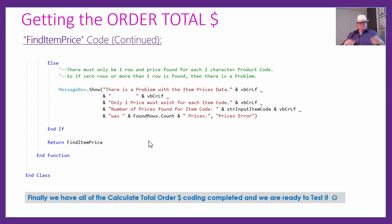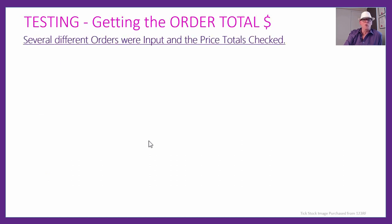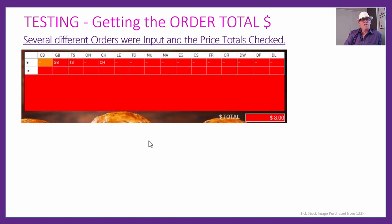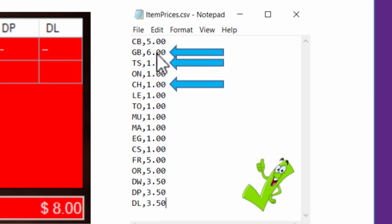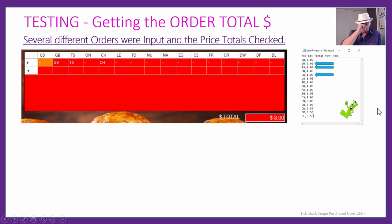We've finally completed all that code for calculating the total, and now it needs to be tested. We check a few different orders to see how the total prices work out. Here's an order — a ground beef burger with tomato sauce and cheese. That should be ground beef at $6, tomato sauce $1, cheese $1 — total $8. And that's exactly what we got in the total. So the prices lookup and order total calculation is all working beautifully. We give it the big happy face tick.